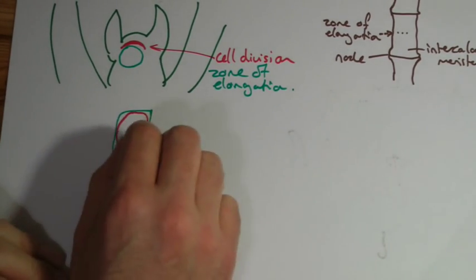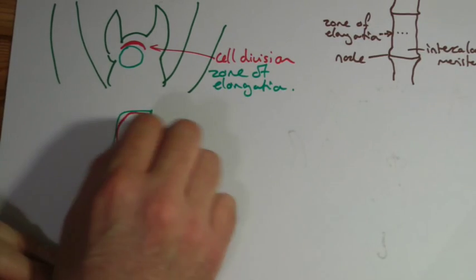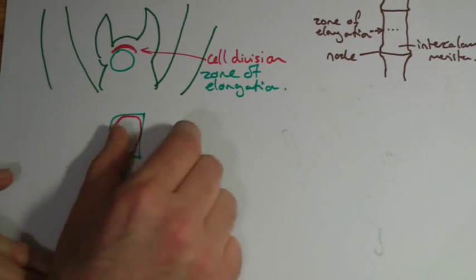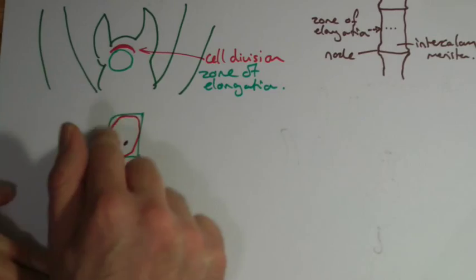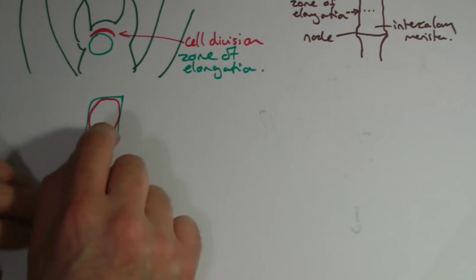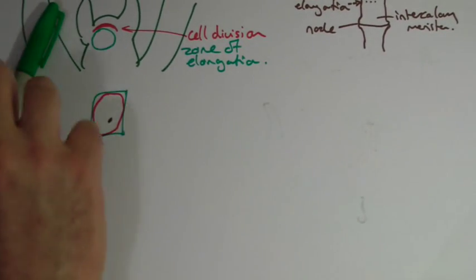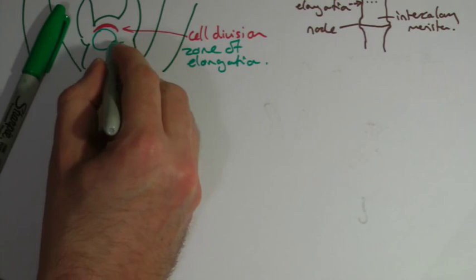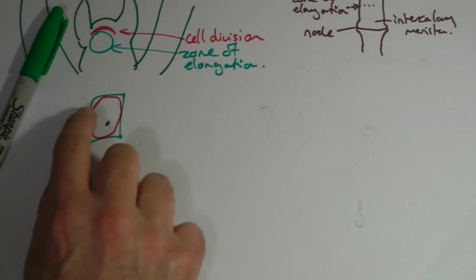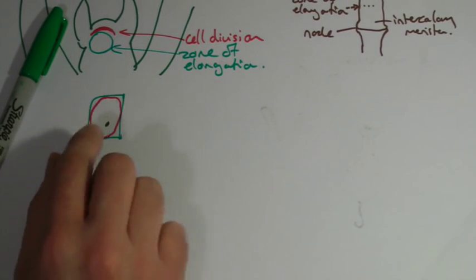The problem we've got is, unlike in animal cells where when it divides by mitosis or grows, it just pops and you get another one, the cell wall is going to stop that. So what happens in elongation is you've got to break down this cell wall in some way. How does it do it?